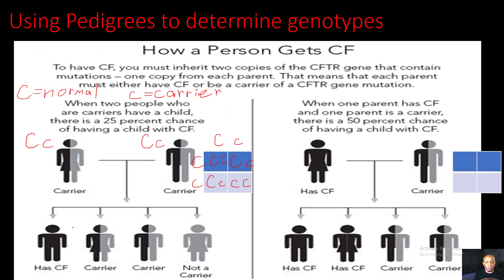So let's take a look. If this individual has cystic fibrosis, the genotype is going to be two small C's. If this female is a carrier, it's going to have a big C and a small C. If this male is a carrier, it's going to have a big C and a small C. And if this female is not a carrier, she's going to have two big C's because she's going to be normal.